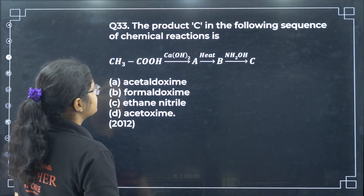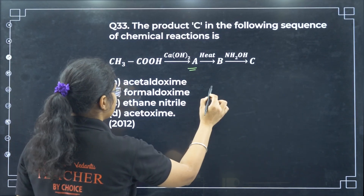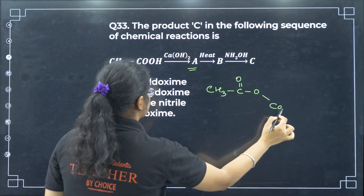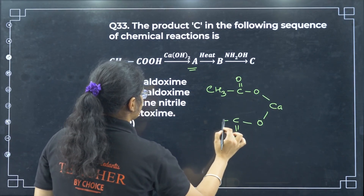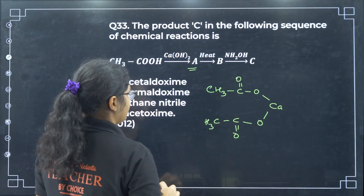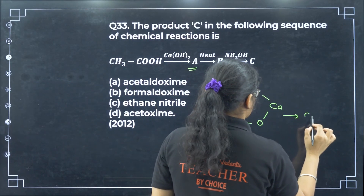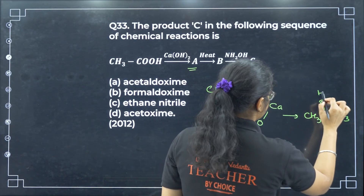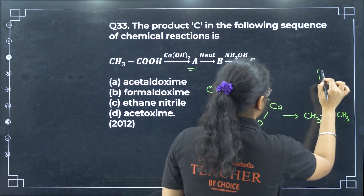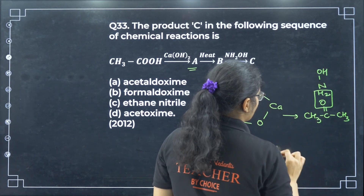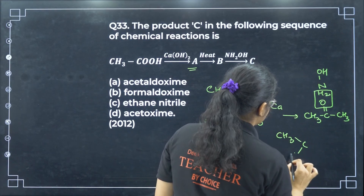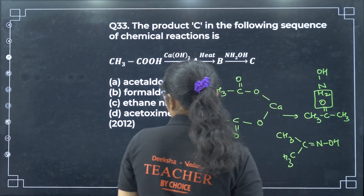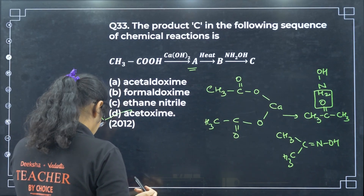The product C in the following sequence of chemical reactions: first we get CH3C double bond O, CaO, C double bond O, CH3 (calcium acetate). On heating, the product is acetone. Treating acetone with NH2OH: H2O is eliminated and we get CH3CCH3 double bond NOH, which is called acetoxime — option D.